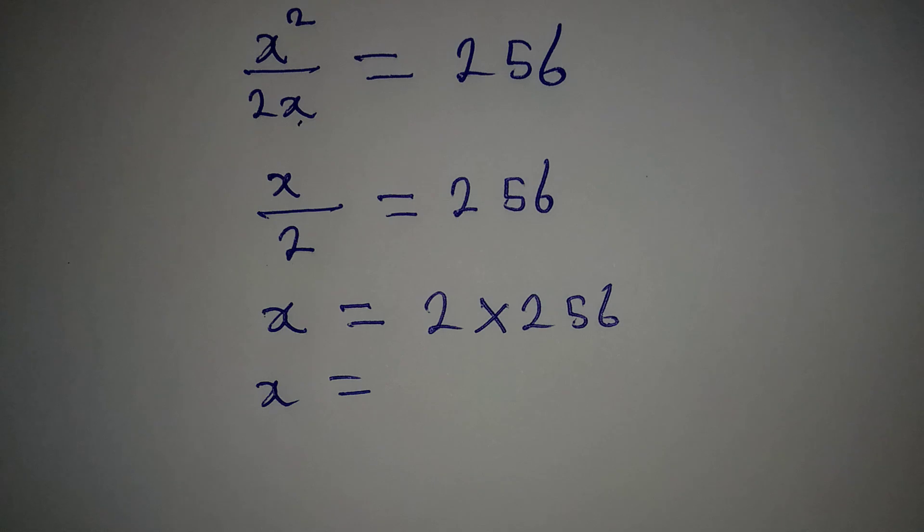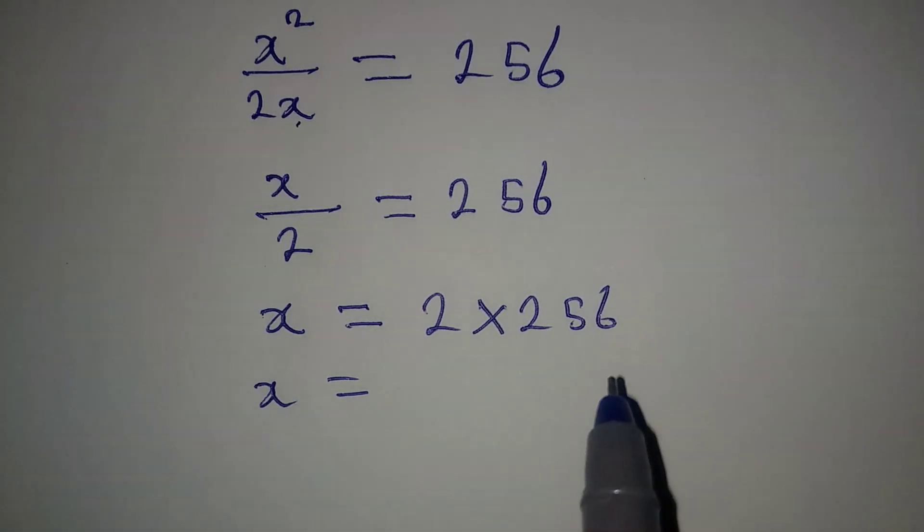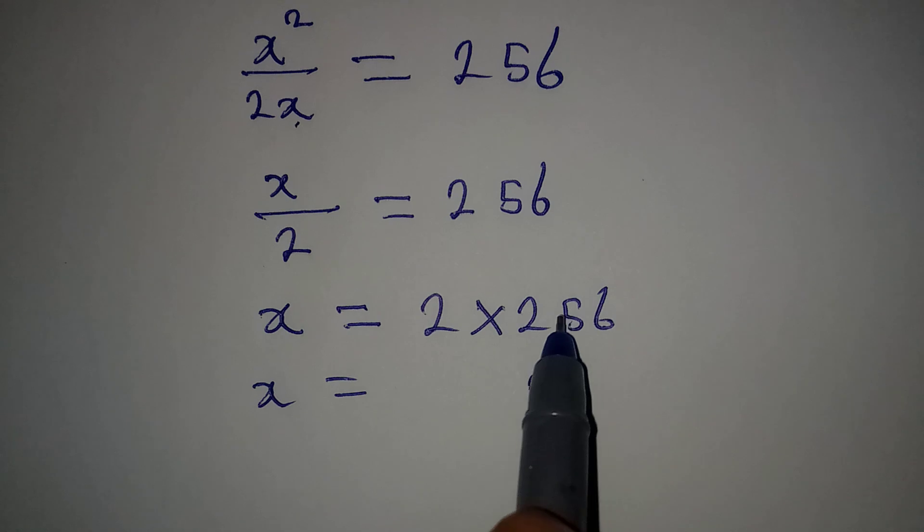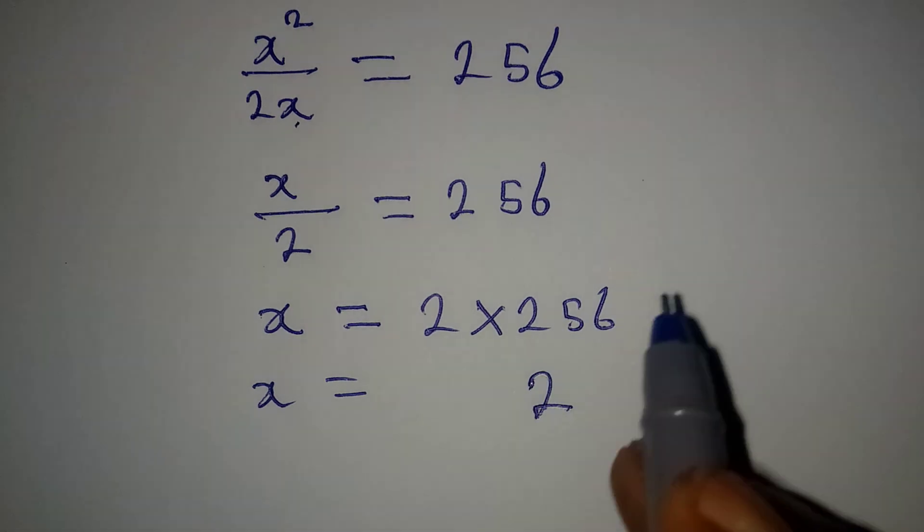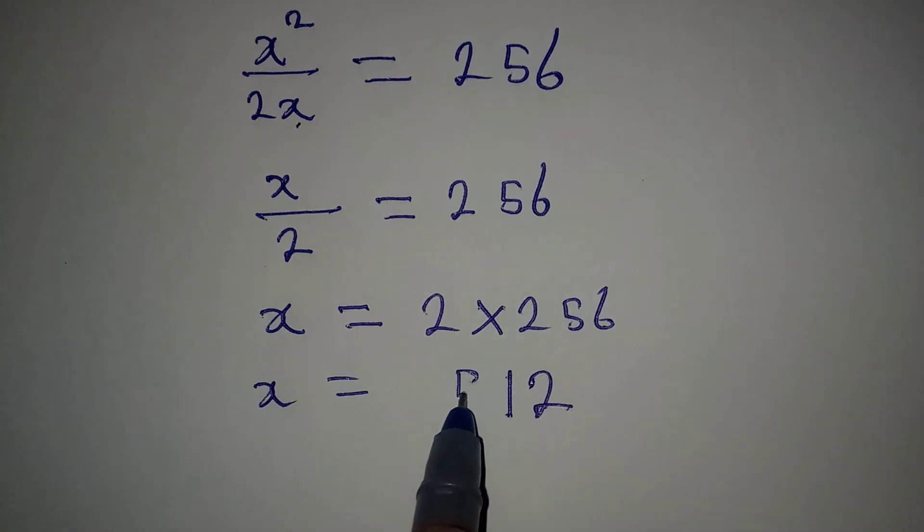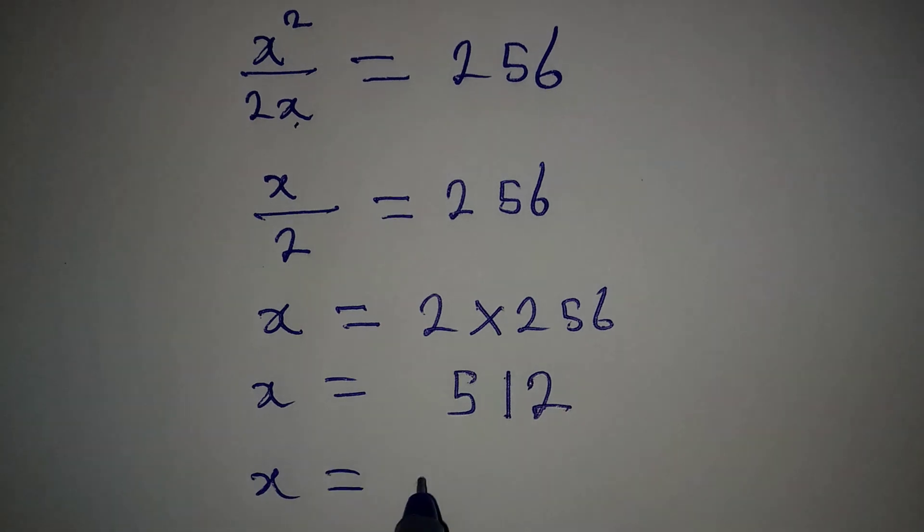And then our x here will be equal to, now let's go over here. 2 times 6 is 12, write 2 carry 1. 2 times 5 is 10, plus 1 is 11, carry 1. 2 times 2 is 4, plus 1 is 5. So this means that our x is equal to 512.